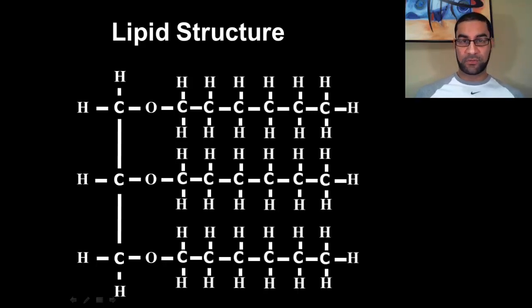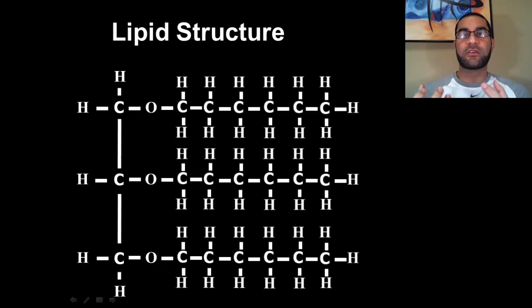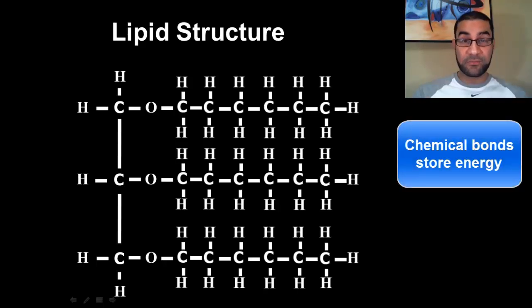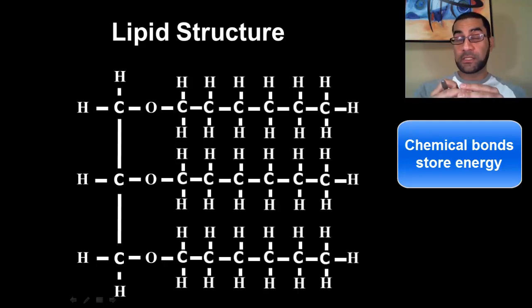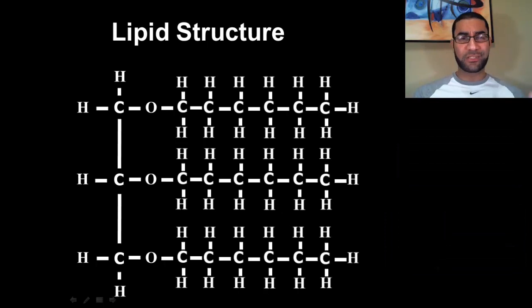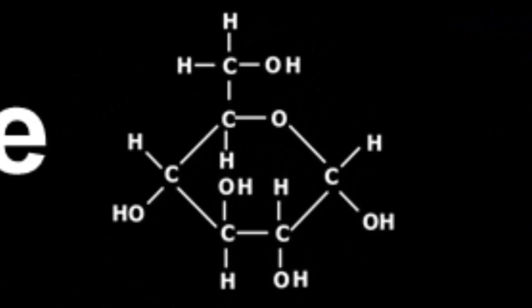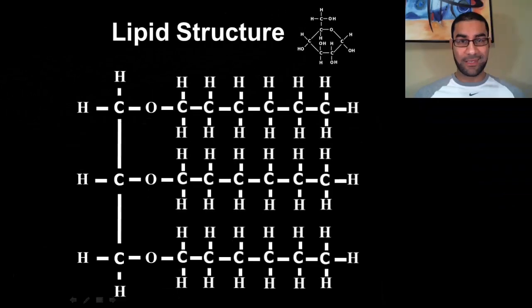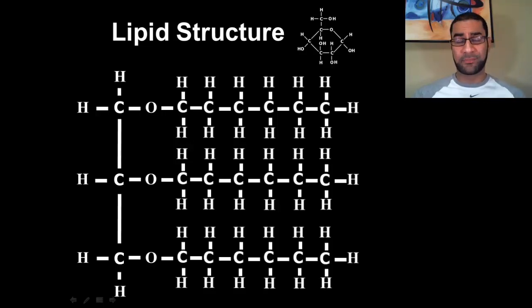Let's start with the good news. A glucose molecule only has six carbons, 12 hydrogens, and six oxygens. It's the bonds that hold these elements together that actually store all of that potential energy that you can turn around and use for your cells. The more chemical bonds there are in a molecule, the more potential energy is stored within that molecule. So the bigger the molecule, the more stored energy there is. Lipid molecules are so much larger than a glucose molecule — each fatty acid tail extends out significantly, so a whole lot of bonds are available in a lipid.